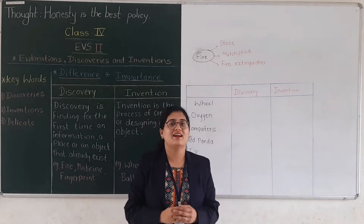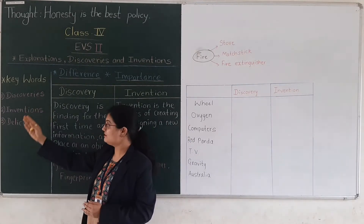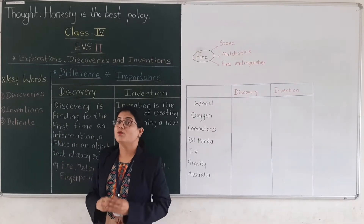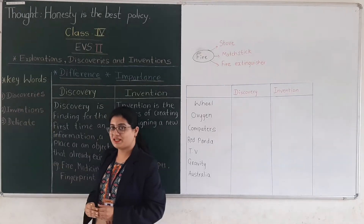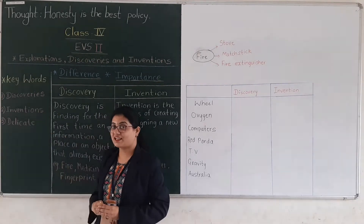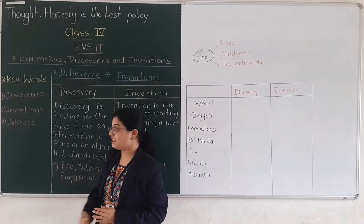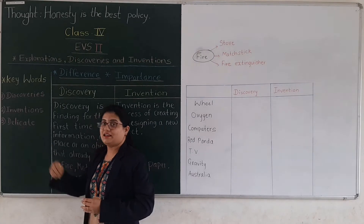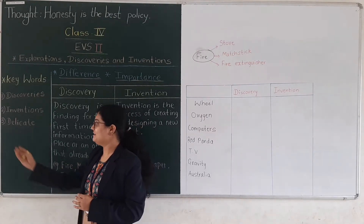Open your notebook and write down the keywords. The keywords are: discovery, invention, and delicate. The first keyword is discovery, second one is inventions, and the third word is delicate.